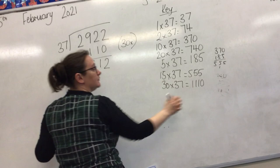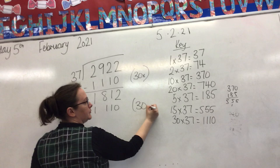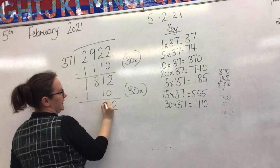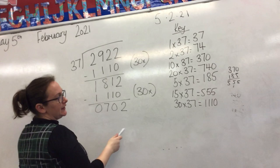Then I take some more off. I could take this off again - take away 1110, which is 30 times. So 2 take 0 is 2, 1 take 1 is 0, 8 take 1 is 7, and 1 take 1 is 0.